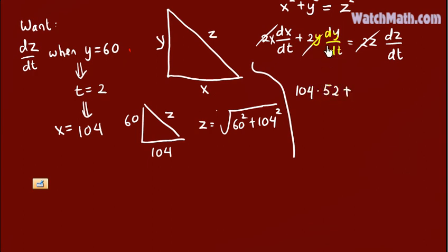Plus, we should cancel the two, not the Y. Y equals 60, multiply by dY/dt. dY/dt is the speed of the northbound train, which equals 30.